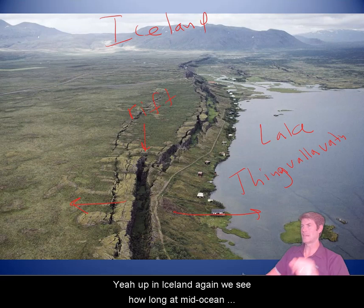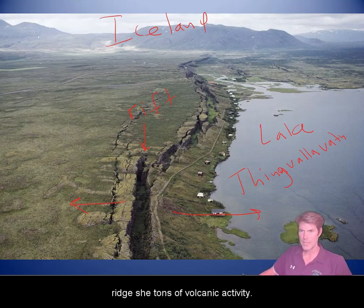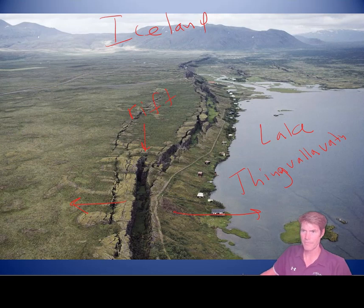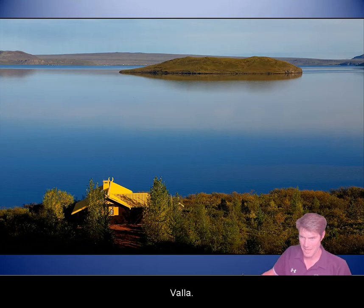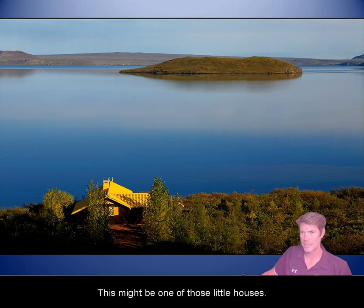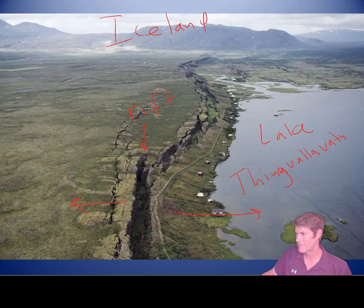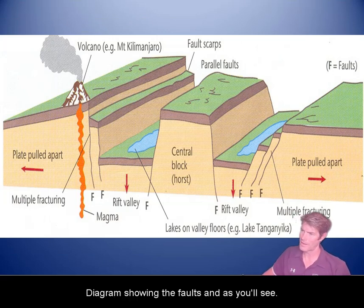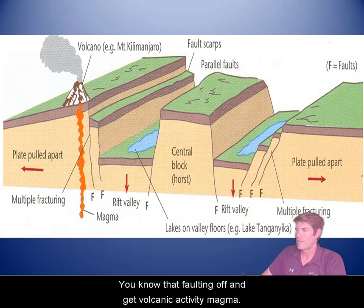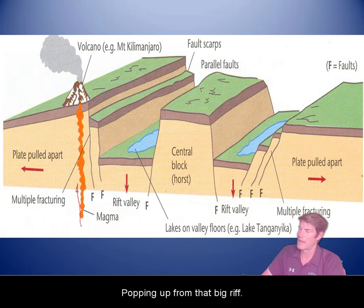Up in Iceland, along that mid-ocean ridge, you see tons of volcanic activity and features that come from it. This is the same beautiful Lake Thingvala. Here's a really nice diagram showing the faults — that faulting often gets volcanic activity and magma popping up from that big rift.